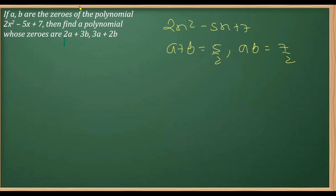The next step is to write down the standard formula for the equation of a polynomial: k times (x² minus sum of zeros times x plus product of zeros).